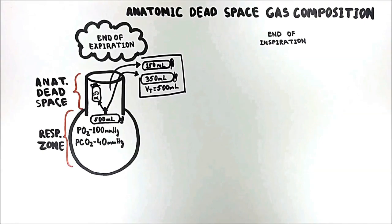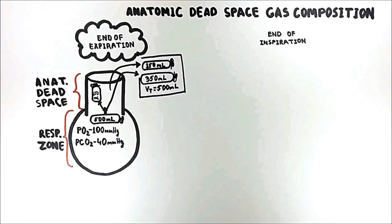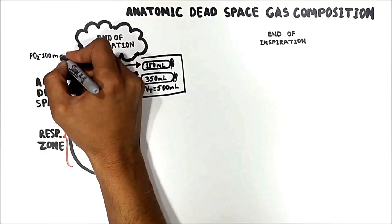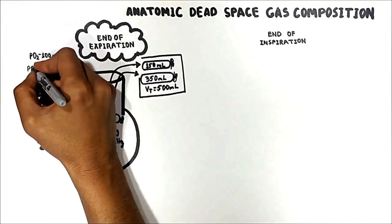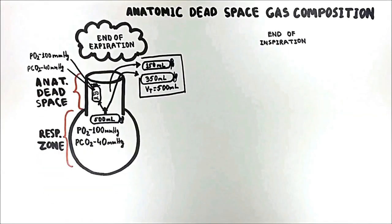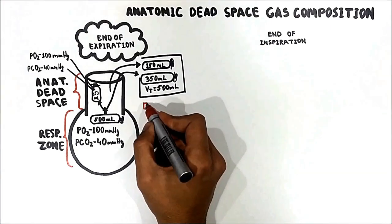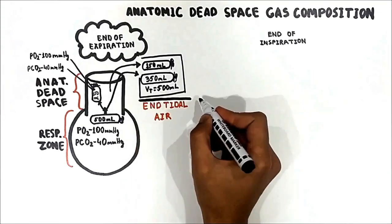This means that the anatomic dead space at end of expiration is filled with air that originated in the alveoli or respiratory zone. Thus, at the end of expiration, the composition of air in the anatomic dead space is the same as alveolar air: PO2 is 100 mmHg and PCO2 is 40 mmHg — the same as in the respiratory zone. This is high-yield for the USMLE. This also means that a sample of expired gas taken near the end of expiration is representative of the respiratory zone and is called end-tidal air.